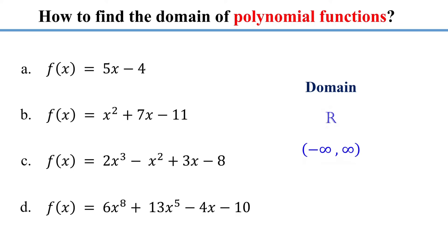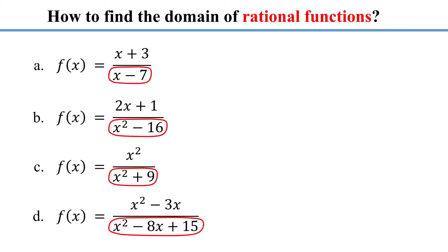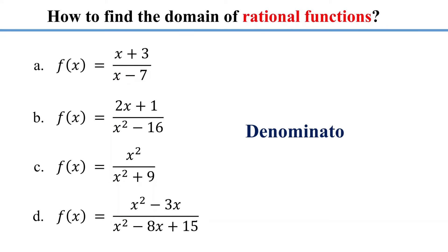Now let's move on to finding the domain of rational functions. Unlike polynomial functions, rational functions do have a variable in the denominator. Therefore, for a rational function to be defined, the denominator must not equal zero, as division by zero is undefined. To find the domain of a rational function, set the denominator not equal to zero and solve the resulting inequality. The solution to the inequality represents the domain of the function.